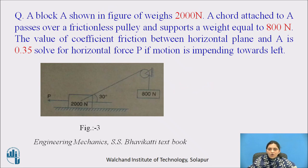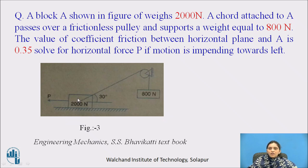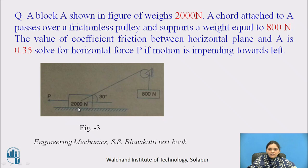We will now solve a numerical problem on friction on a horizontal floor. A block of weight 2000 N rests on a horizontal floor. A cord attached at point A passes over a frictionless pulley and supports a weight of 800 N. The coefficient of friction between the horizontal plane and block A is 0.35. We need to find the horizontal force P if the motion is impending towards the left.